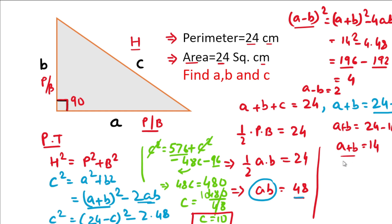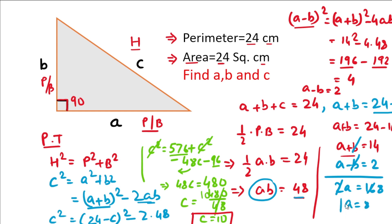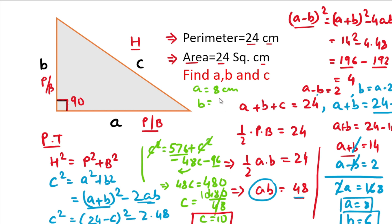Adding the expressions a plus b equals 14 and a minus b equals 2, the b terms cancel and we get 2a equals 16, so a equals 8. Substituting back, b equals 14 minus 8 equals 6, or equivalently 8 minus 2 equals 6. So a equals 8 centimeters and b equals 6 centimeters.